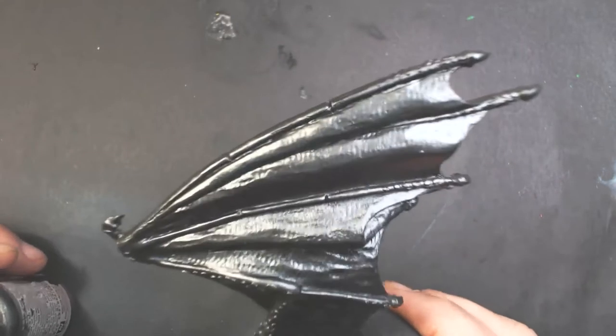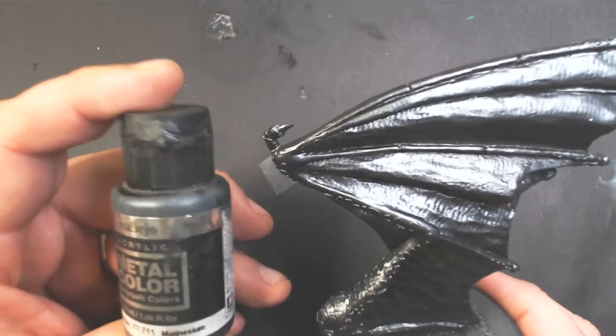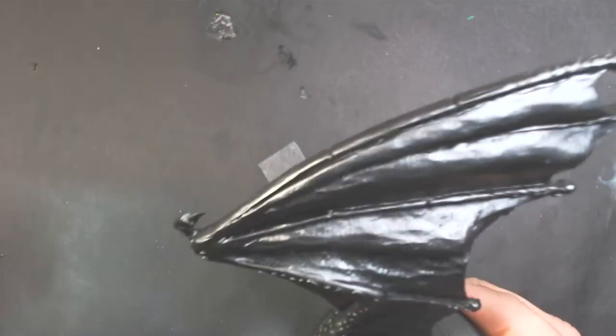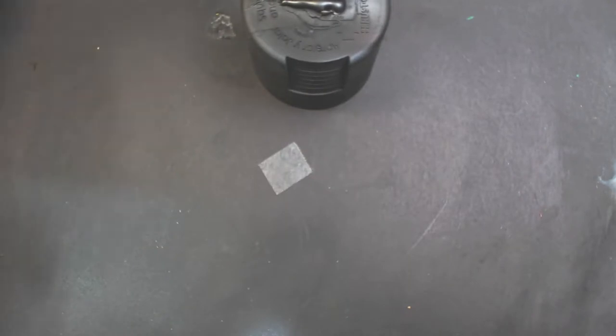So I started off by base coating my model with the Vallejo Metal Color Magnesium, but any dark steel color will work.